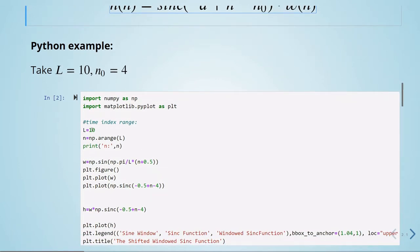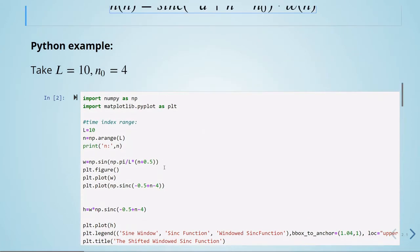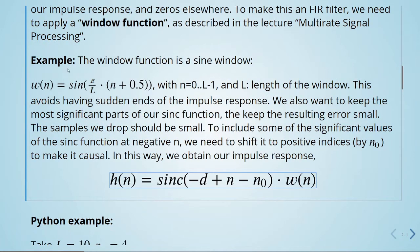We are defining our length equals to 10. We are defining our n0 here, this is 4. So here we have our window function, the sine window. So it is given by this equation here.